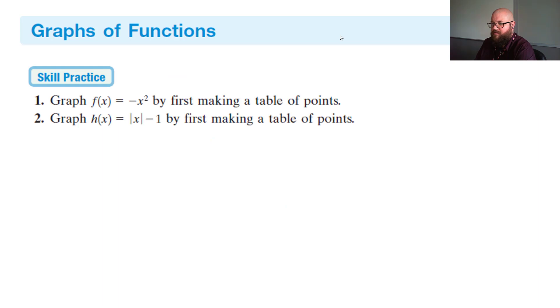Alright, so let's do a little practice here. So we're going to graph by first making a table of points on each one of these. So we're going to say, so our first one is f(x) = -x squared. And then we have, for the second one, h(x) = absolute value of x minus 1.